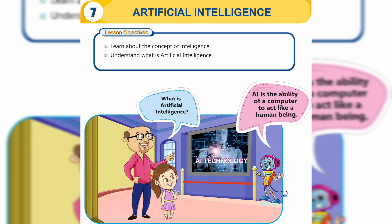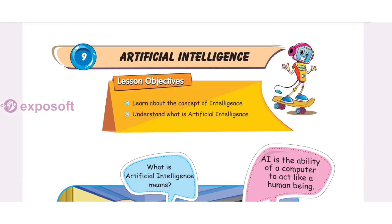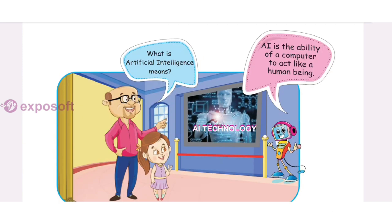In this chapter we will learn the concept of intelligence. What is Artificial Intelligence? Children, what does Artificial Intelligence mean? Artificial Intelligence, or AI, is the ability of a computer to act like a human being.